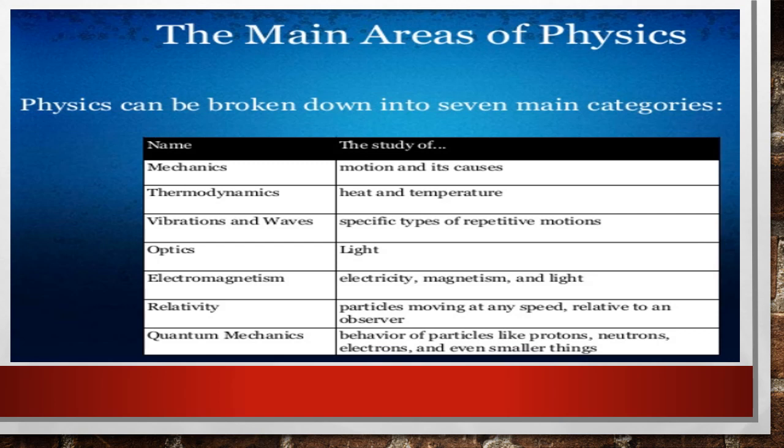The main areas of physics can be broken down into seven main categories: mechanics — motion and its causes; thermodynamics — the study of heat and temperature; vibration and waves — specific types of repetitive motion; optics — the study of light; electromagnetism — electricity, magnetism, and light; relativity — the study of particles moving at any speed relative to an observer; and quantum mechanics — the behavior of particles like protons, neutrons, electrons, and even smaller things.